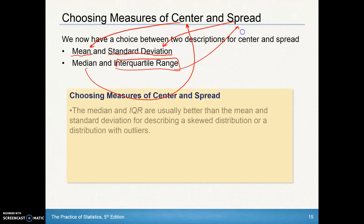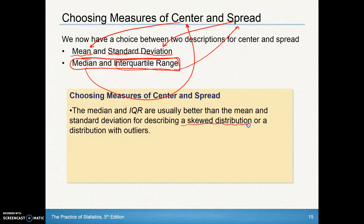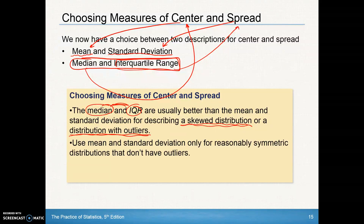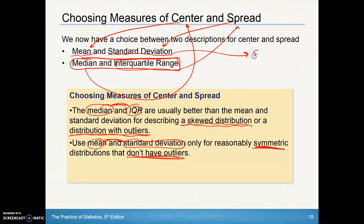The median and IQR are used as measures of center and spread for when you've got a skewed distribution or a distribution with outliers. The median and IQR are usually better than the mean and standard deviation when there's a skewed distribution or outliers. Correspondingly, use the mean and standard deviation when you've got a symmetric distribution and no outliers.